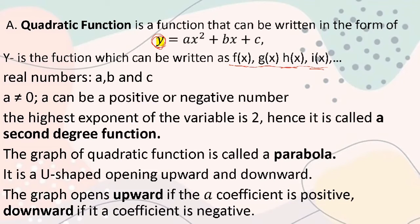A cannot be zero because the quadratic term must be present — that's what makes it a quadratic function. A can be a positive or negative number, and this determines the direction of the graph. The highest exponent of the variable is two, so it is called a second-degree function. The graph of a quadratic function is called a parabola — a U-shape that can open upward or downward. When a is positive, the parabola opens upward.